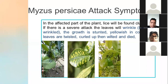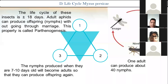Myzus persicae attack symptoms: In the affected parts of the plant, leaves will be found curled or straight. If there is a severe attack, the leaves will become wrinkled, growth is stunted and yellowish in color, the leaves are twisted, discolored, wilted, and die.